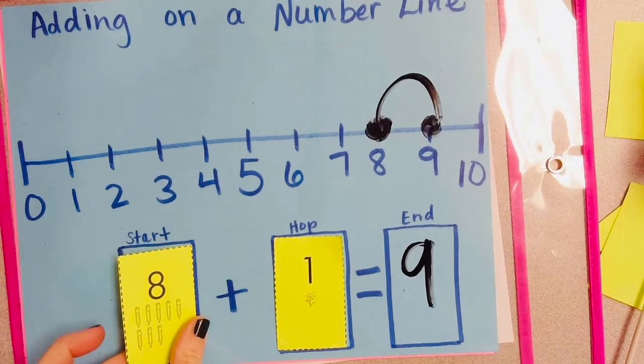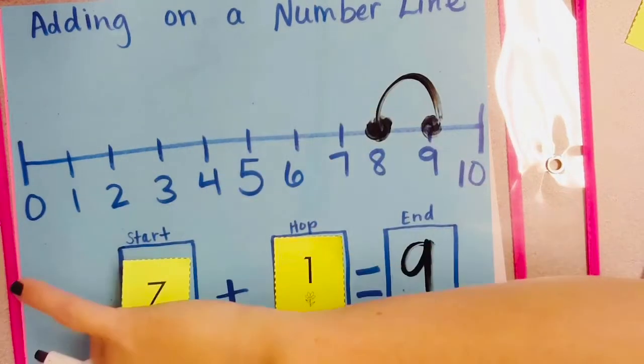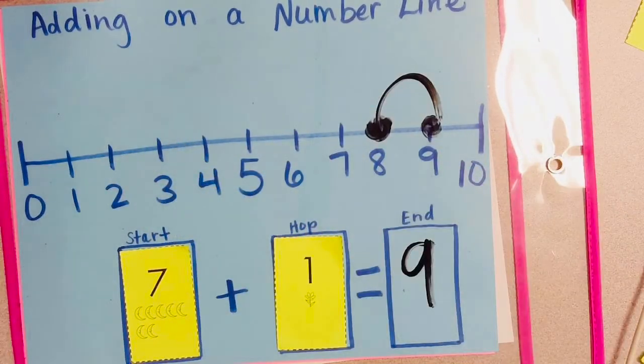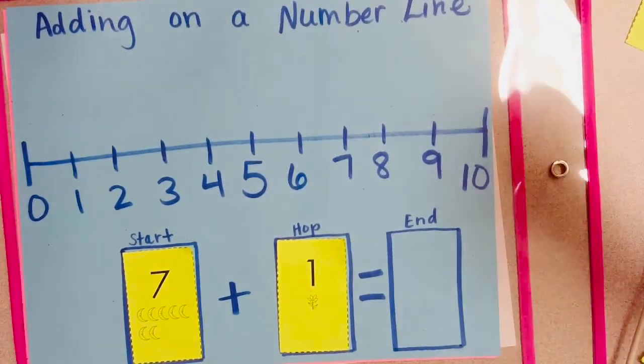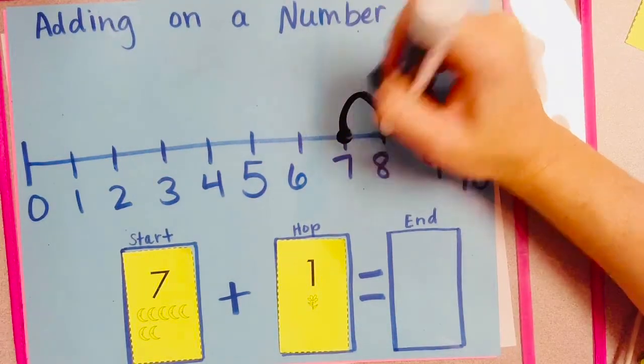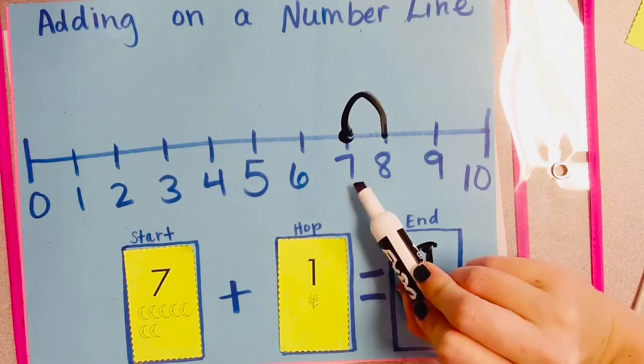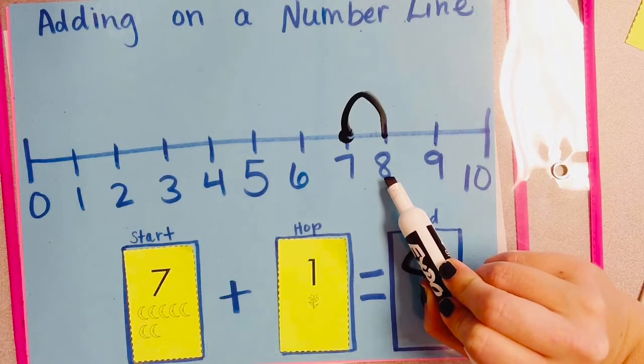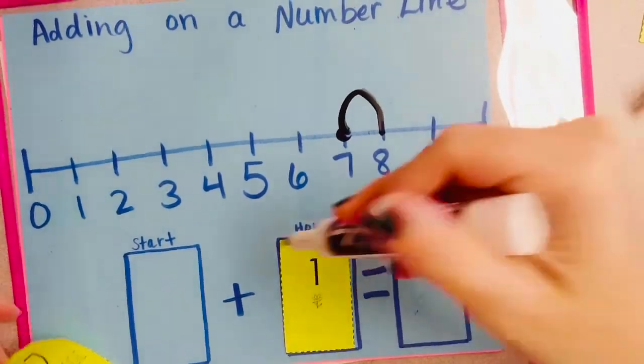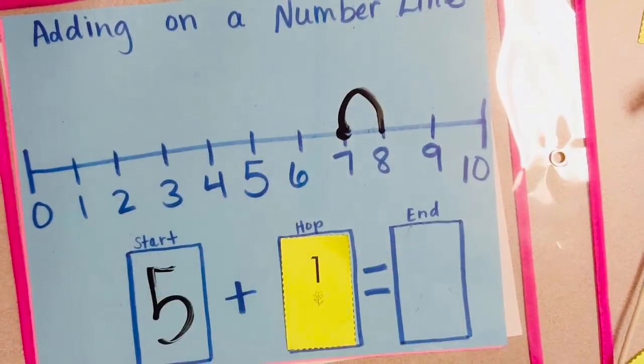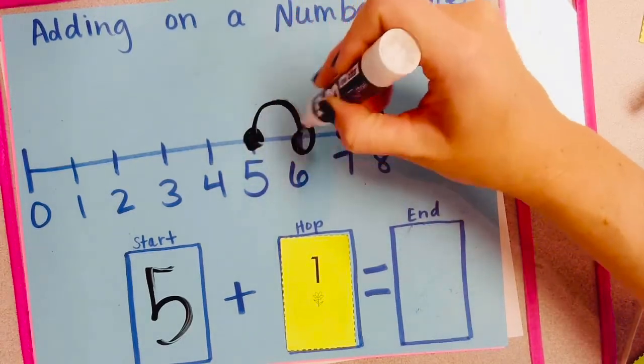What if I change this number to 7? Can you guess without me using Mr. Frog what 7 plus 1 would be? 8. Whenever you add 1, it's the number that comes next when you're counting. So what would 5 plus 1 be? 6.